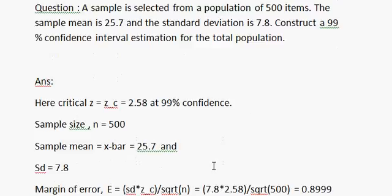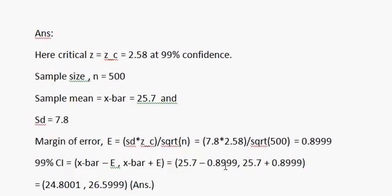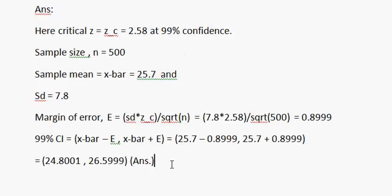And it is the 99% confidence interval for population mean. It means that we are 99% sure that the population mean will lie between these two values.